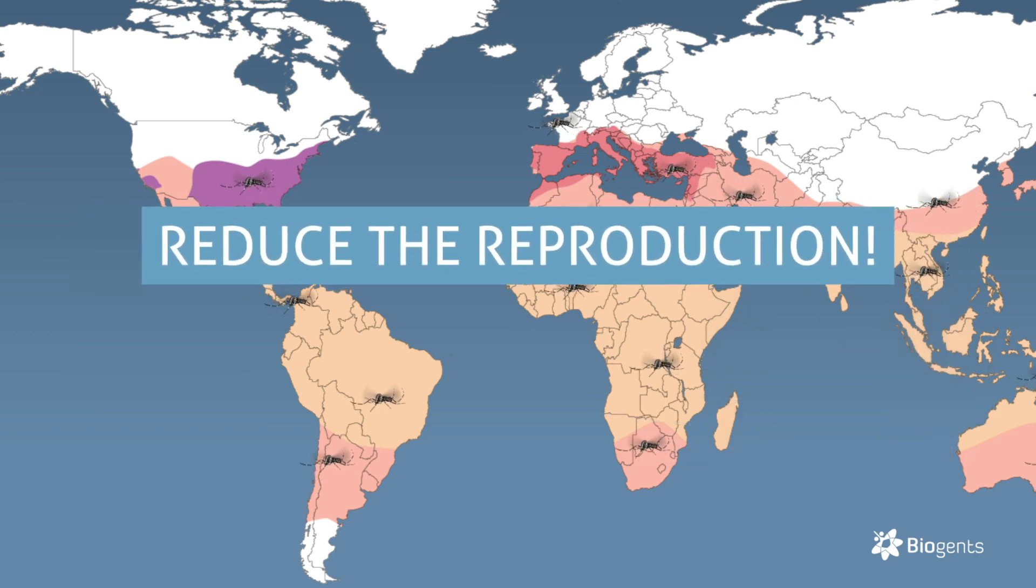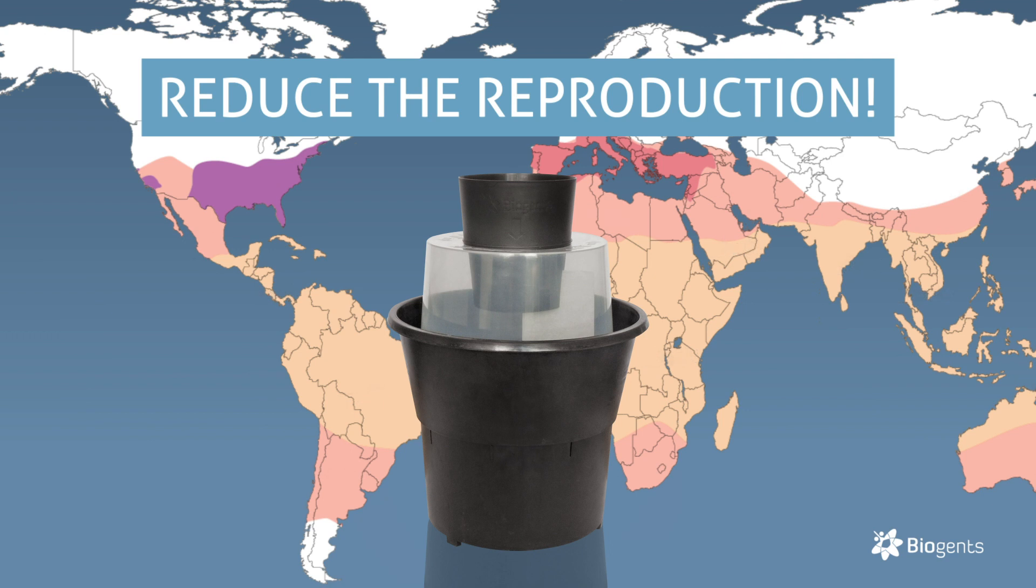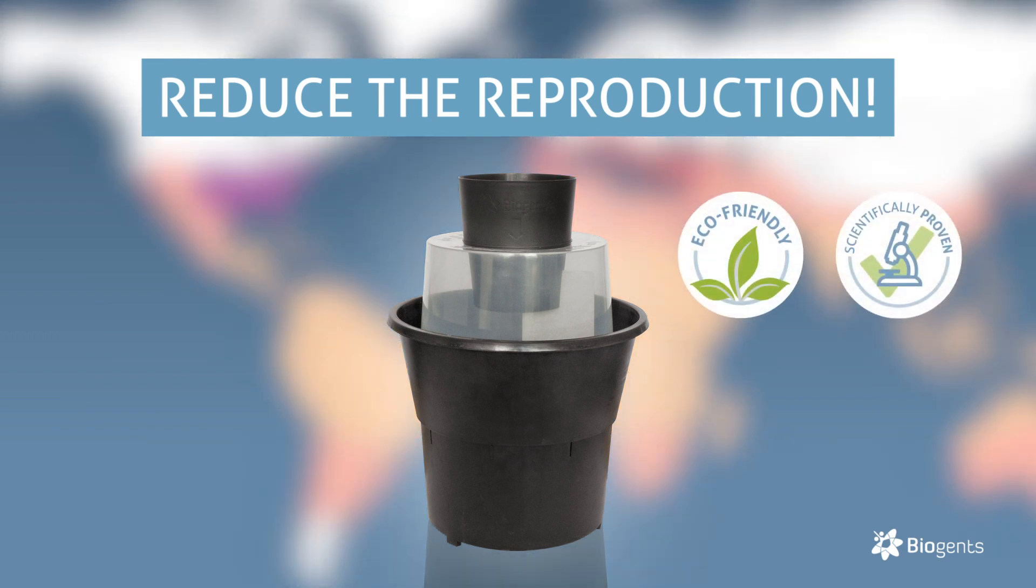To reduce the reproduction of tiger mosquitoes, Biogen's BG Gat Trap is the ideal tool, eco-friendly and scientifically proven.